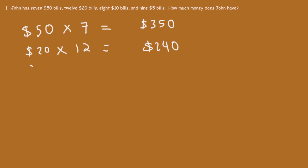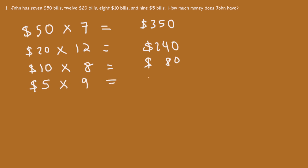Next, he has 8 $10 bills. 10 times 8 is 80. And then he has 9 $5 bills. 9 times 5 is 45.